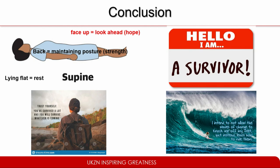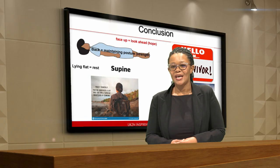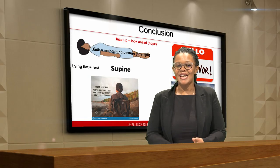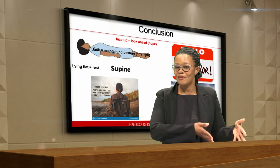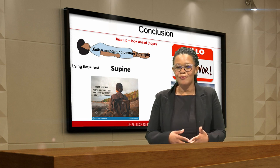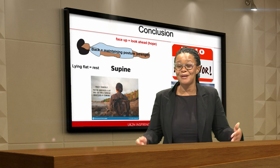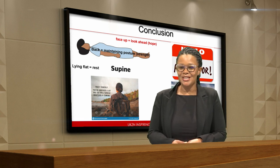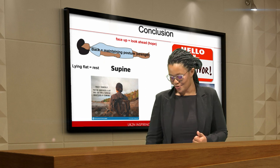In conclusion, I use the analogy of supine position because lying flat resembles rest, trust, and stability in what you're about to experience that is abnormal. The back speaks of maintaining posture, and for me it meant having the strength to face new realities; facing up reflected looking ahead and being hopeful of what is to come in a new COVID world and thereafter. Therefore, I am a survivor — I survived, and I learned that I ought to trust myself because I've survived a lot already and will survive whatever is coming. In future, I choose not to allow the waves of change to knock me into a prone position, but instead to learn how to ride the waves of change. Thank you so much.